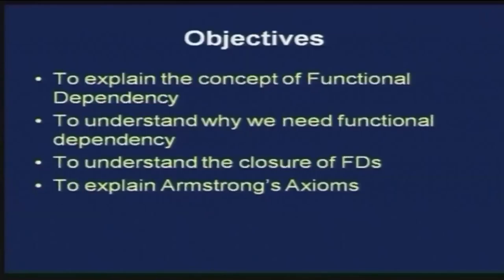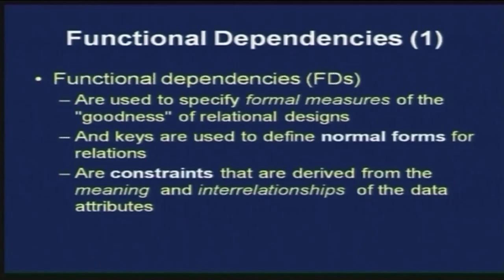The different types of normalization are: first normalization based on keys; second and third normalization and BCNF based on keys and functional dependency; fourth normal form on multi-valued dependency; and fifth normal form on join dependency. Now let us look at the fundamental concept of normalization — functional dependency. Functional dependencies are used to specify formal measures of the goodness of a relational design, and keys are used to define normal forms for relations.